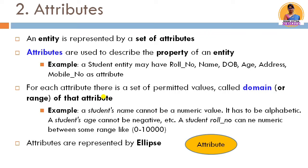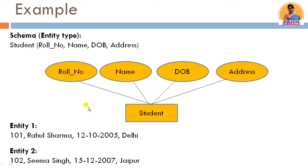We show attributes using an ellipse in the ER diagram. For example, the student entity type has attributes shown in ellipses — roll number, name, date of birth, and address. In the schema, student is the table name and entity name, and its attributes — roll number, name, date of birth, and address — are shown as columns in the relational table.